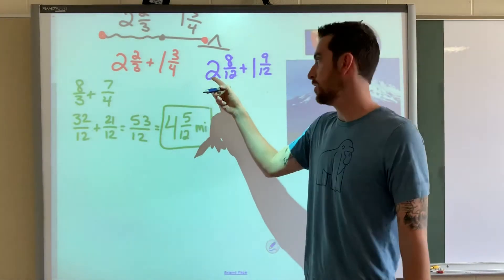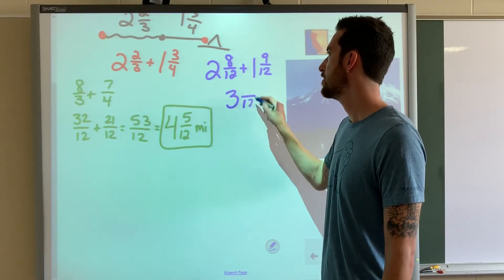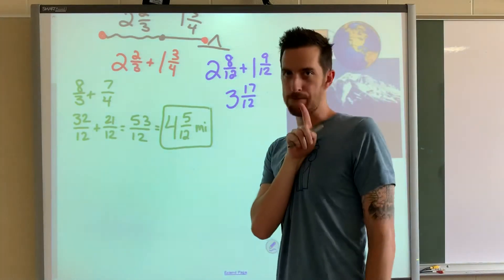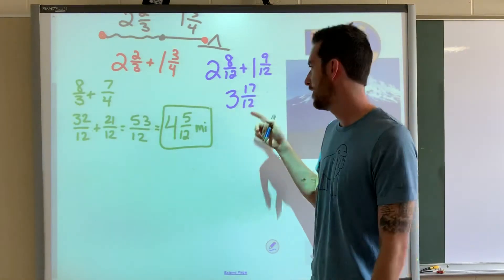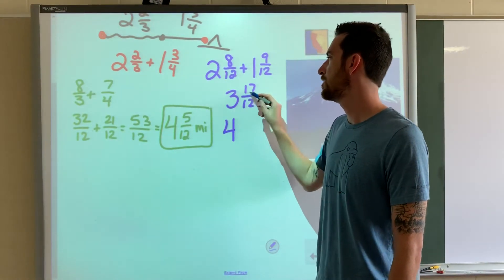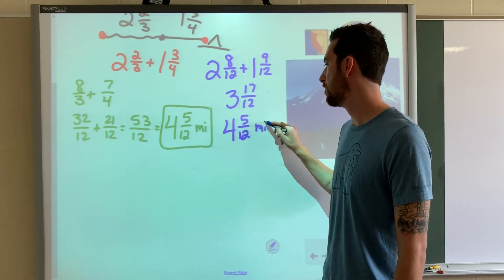So then you can add the big boys. Two plus one is three. And then you add the little fractions. Eight plus nine is 17. Where you're like, three and 17-twelfths. Not for a final answer. We could take a whole other hole out of that. So taking 12 away, now making it four. 17 minus 12 leaves you with the five-twelfths miles that way.